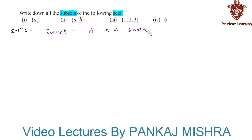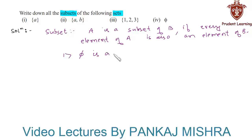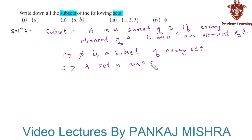A is a subset of B if every element of A is also an element of B. While writing the subsets, you should keep in mind that the null set or empty set is a subset of every set, and a set is also a subset of itself.